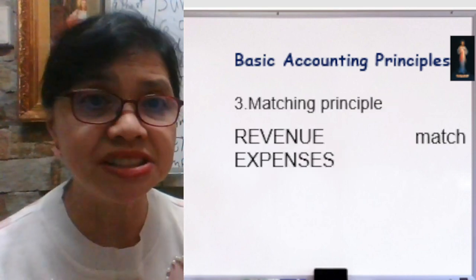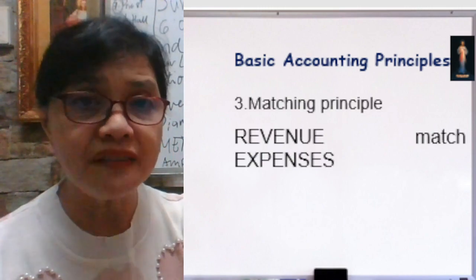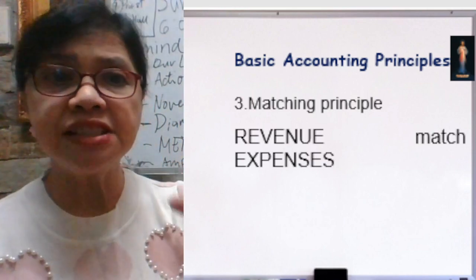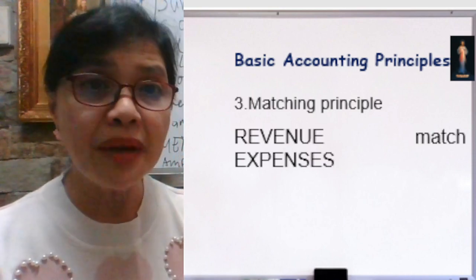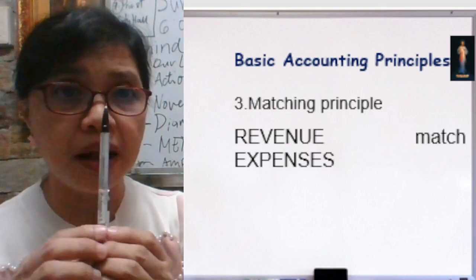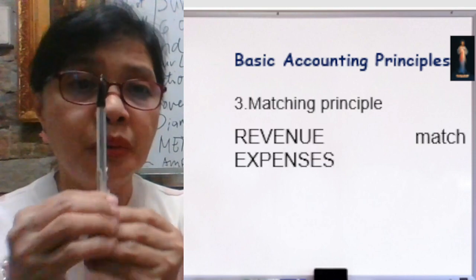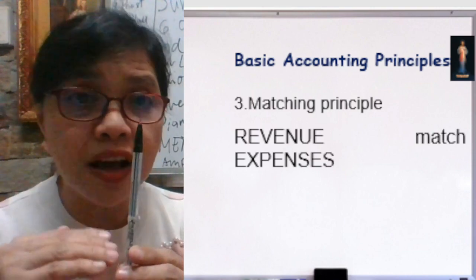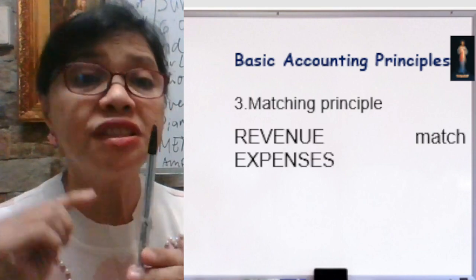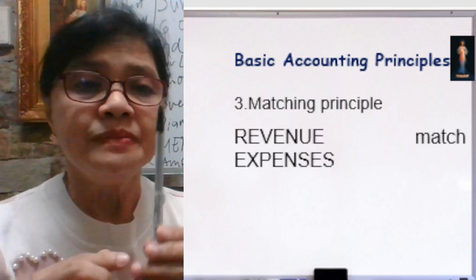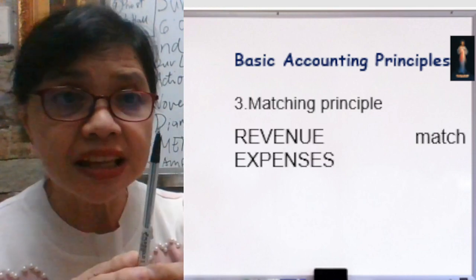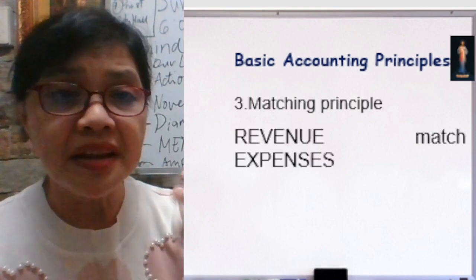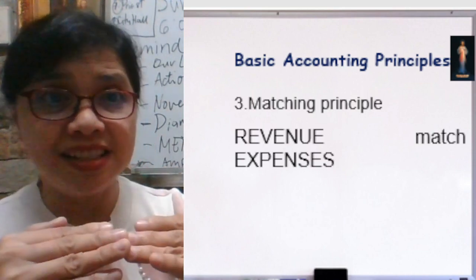Number three: the Matching Principle. This means we have to match revenues to expenses. For example, if I received 100,000 in revenues from producing ballpens, and I incurred 30,000 in costs to produce that quantity, I should reflect both. My revenue should be matched with the corresponding expenses for the same amount and quantity of goods.